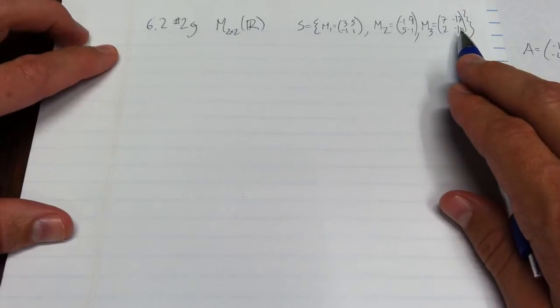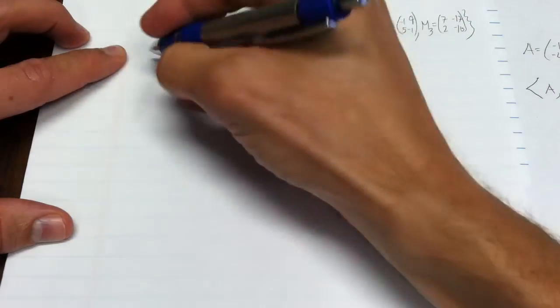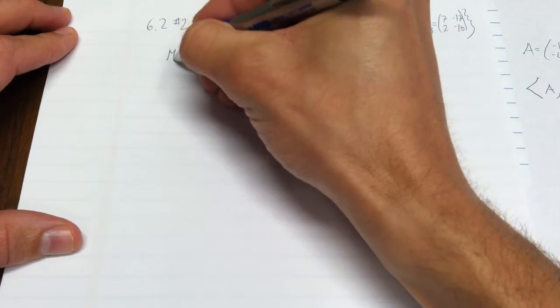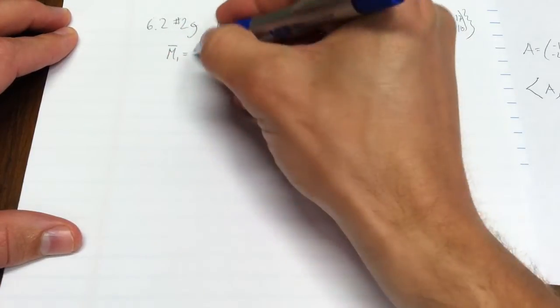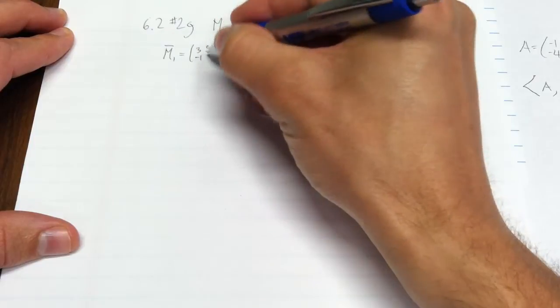That process, called Gram-Schmidt orthogonalization, takes the first vector and leaves it alone. So what I have here is m1 bar is just (3, 5, -1, 1).